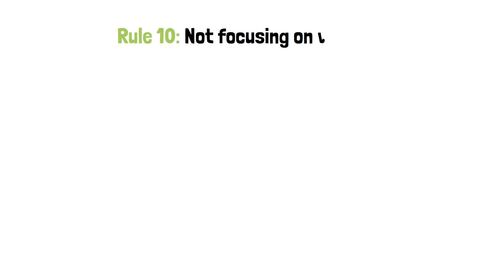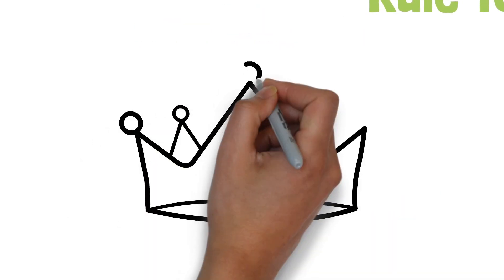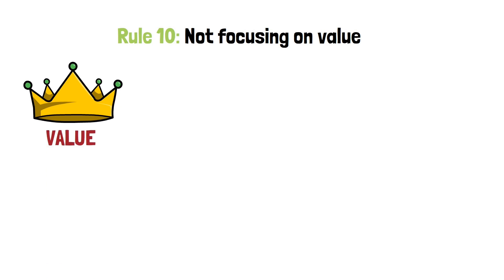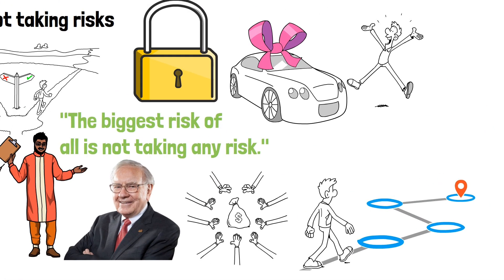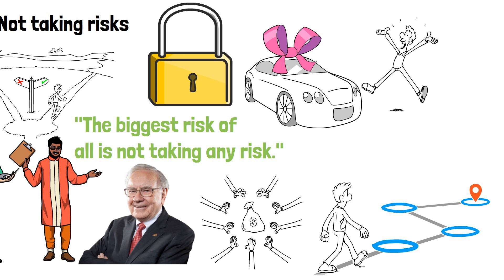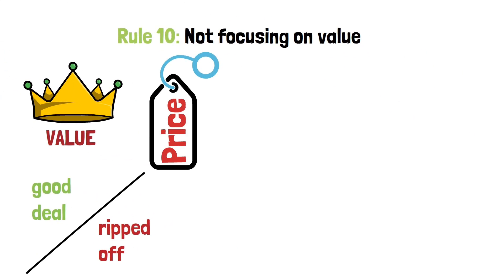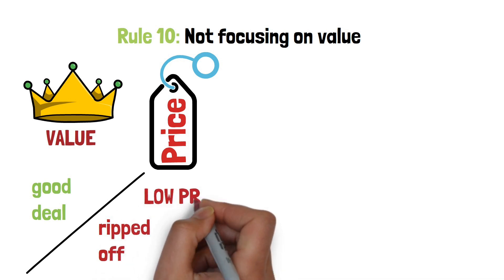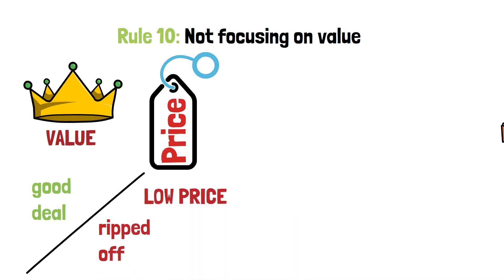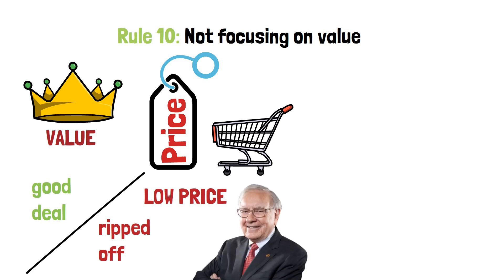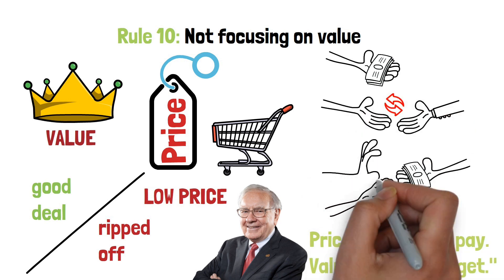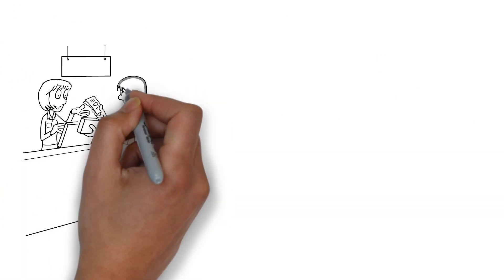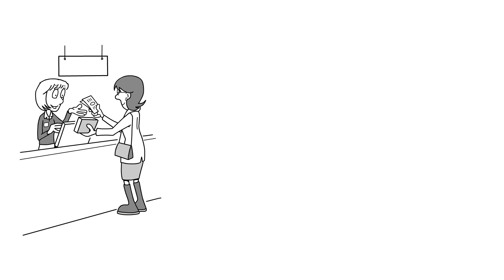Rule 10: Not focusing on value. In the realm of personal finance, value is king. It's the difference between getting a good deal and getting ripped off. But too many people focus on price instead of value. They are lured by the siren song of low prices, without considering the quality of the goods or services they are buying. Buffett himself is a firm believer in focusing on value. He has said, price is what you pay, value is what you get. In other words, it's not how much you pay for something that matters, but how much value you get from it.